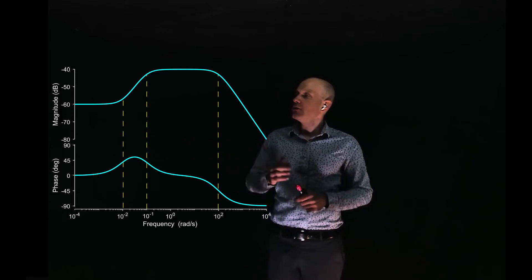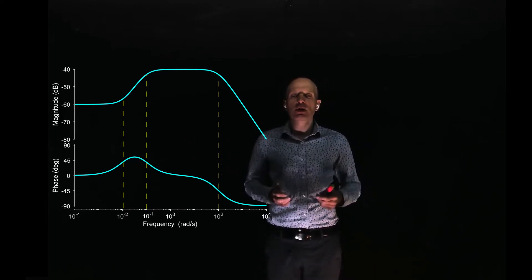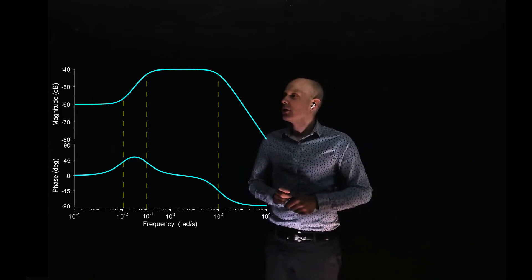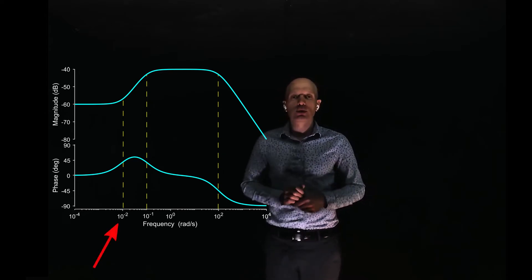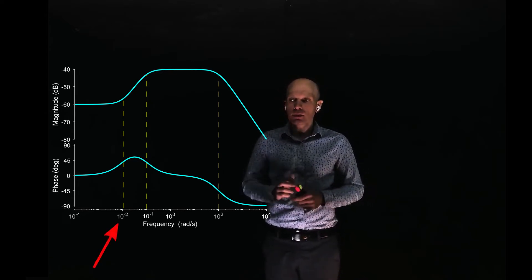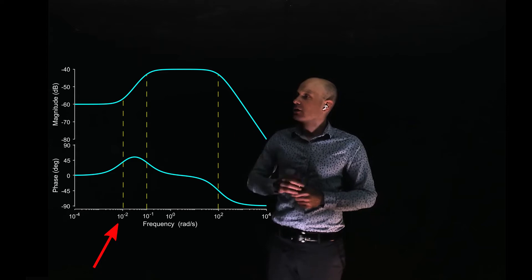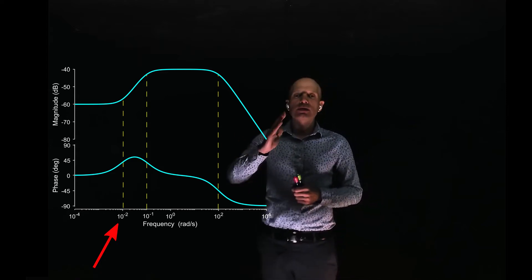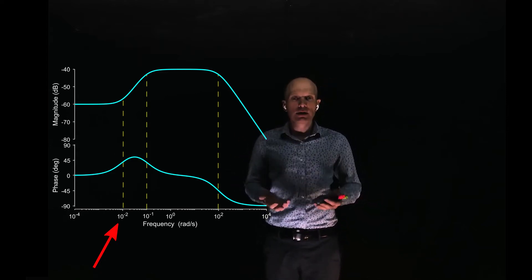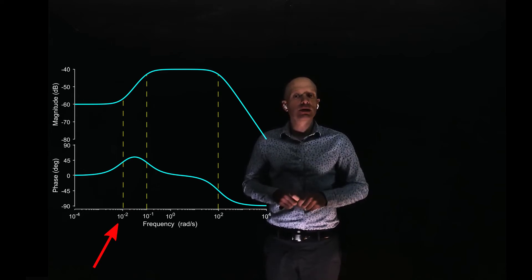When we now start to increase the frequency, we pass a first cutoff frequency at 10 to the power of negative 2, 0.01 radians per second. Notice that past that cutoff frequency, the Bode plot now starts to go up. That indicates that at that specific frequency, we have a zero.